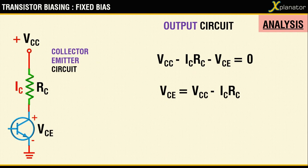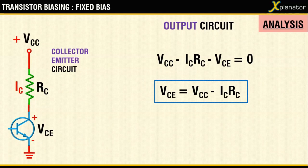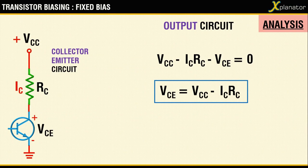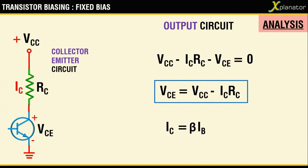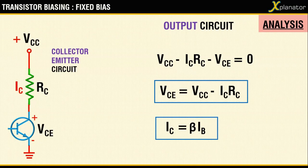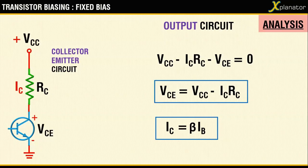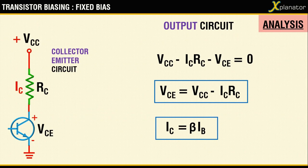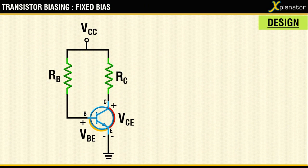And the third unknown quantity, that is IC, can be found out as beta times IB because of the configuration. Now with that, we have completed the three equations for the three unknown parameters. Moving over to the second part, that is design.